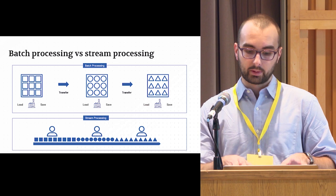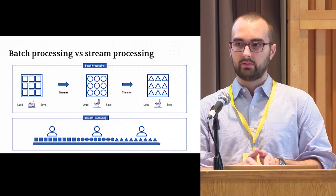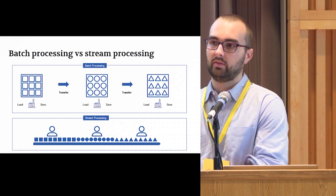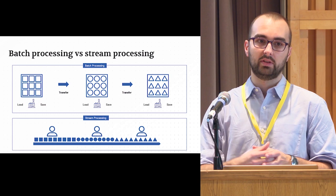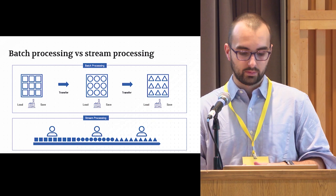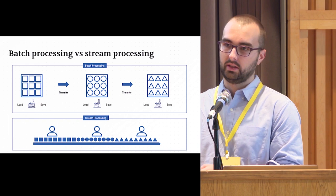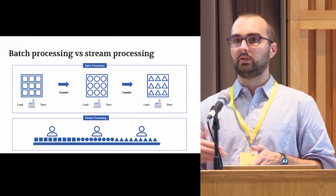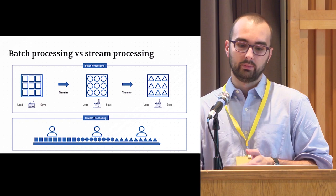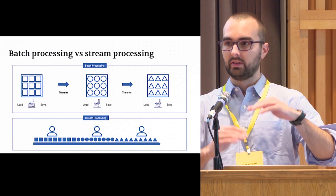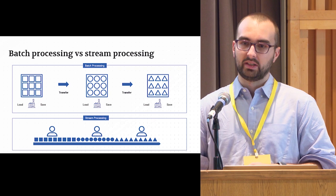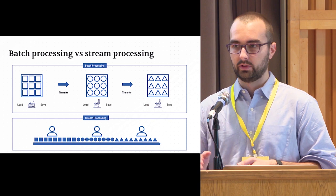Batch processing has some good points — it's usually higher throughput — but the problem is you have your file, you transform it, potentially have inventory in the middle, transform again, and you only get your result once you've processed all your data. Stream processing is different: you get the first element in, work on it, get the next, work on it, and you can get your first result very fast — near real-time results with much lower latency than batch. There are also hybrids — streaming with batching in the middle — but the idea is that time to first result is much lower when you do streaming.